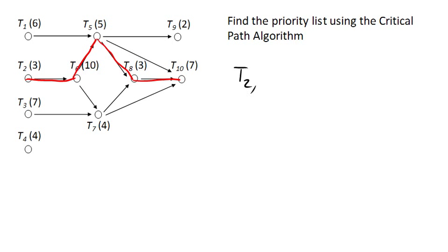So now we're going to imagine what would happen if task 2 wasn't part of the graph at all. So we've already sort of used it up. What's the longest path now? And it turns out this remaining path is still the longest, and so the next task on our list is going to be task 6.